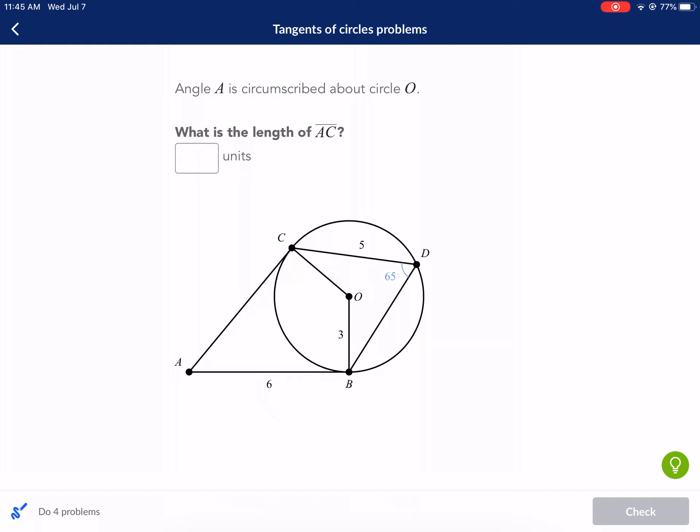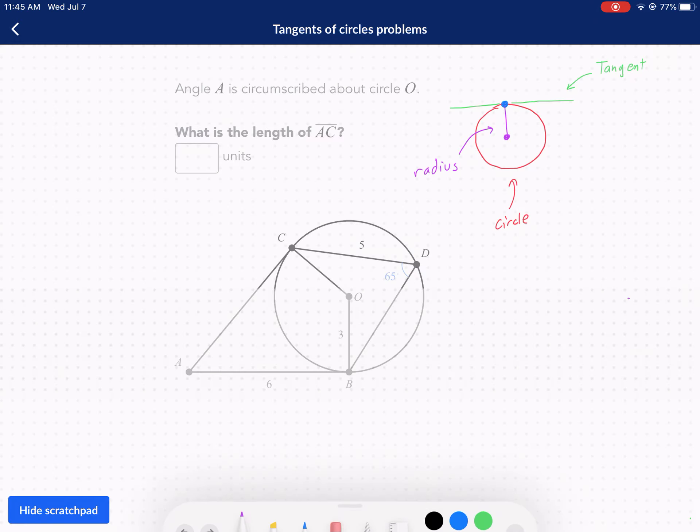Angle A is circumscribed about circle O. What is the length of AC? A couple things. Because this is tangents of circles problems, AC is assumed to be a tangent. So let me identify AC here. AC is this guy, so we're going to have to find his length eventually. But what is a tangent? A tangent is a line that touches a circle at only one place. So right there. Now the cool thing about a tangent line is that when it connects with a radius drawn in purple here, it creates a 90 degree angle with that tangent line.